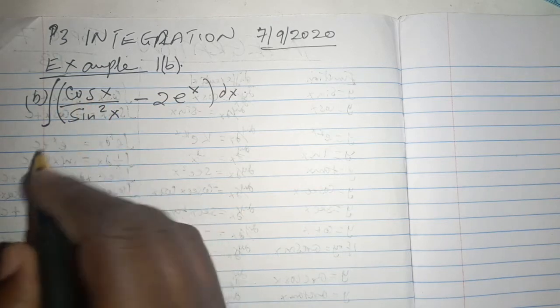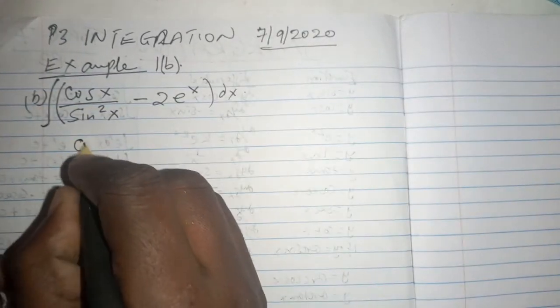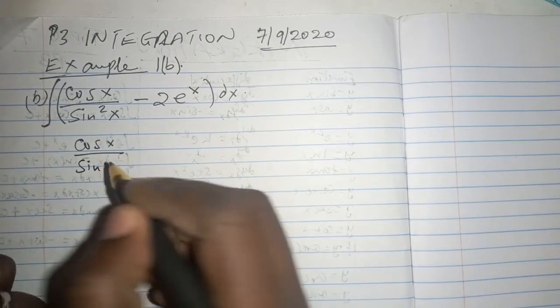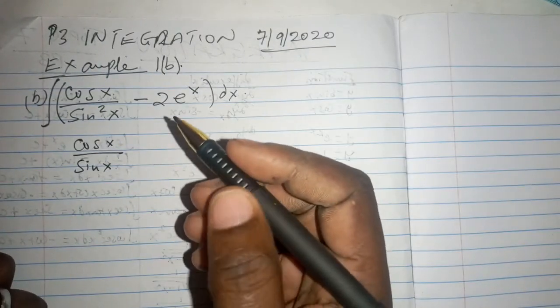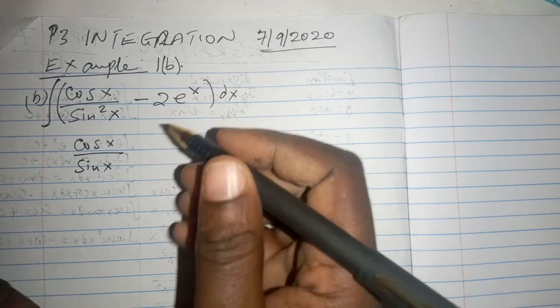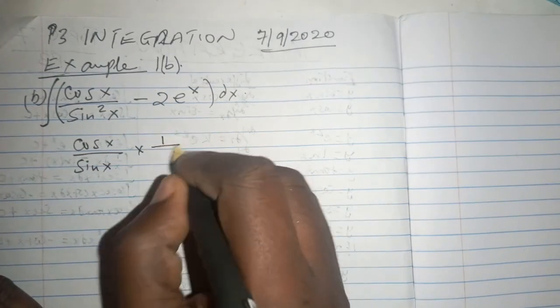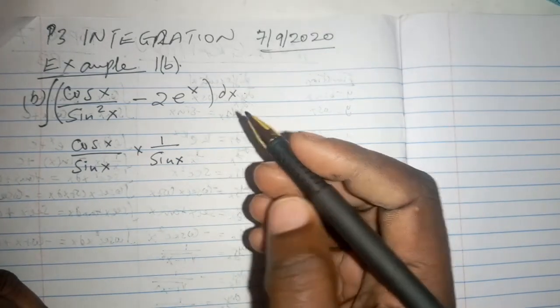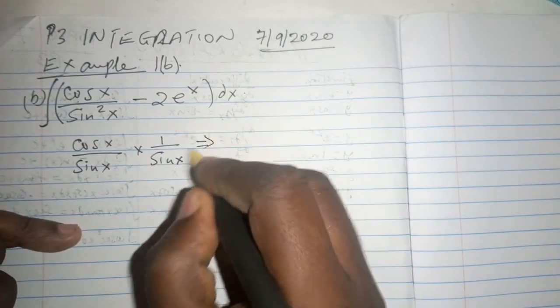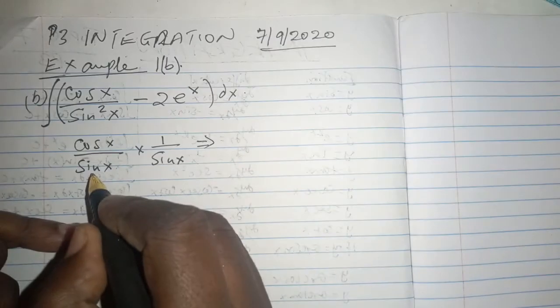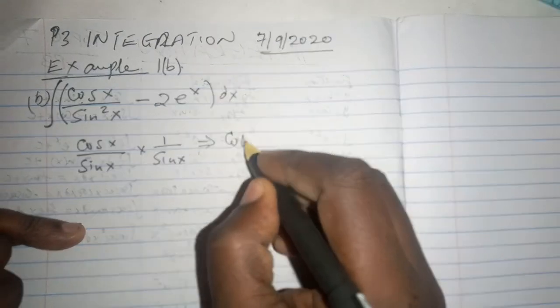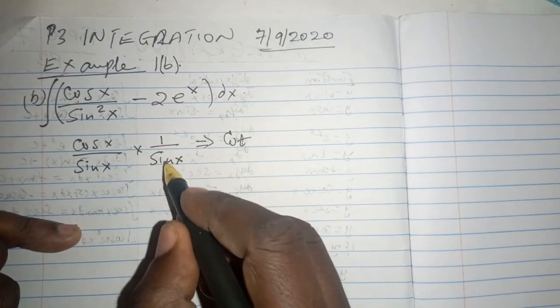So the best way is to dismantle this part and write it in this form: the cosine of x over the sine of x multiplied by 1 over the sine of x, and we leave it at that.